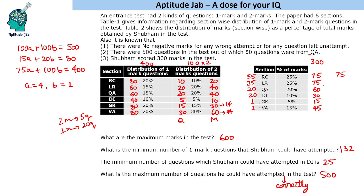If the question asks maximum questions attempted correctly: to maximize correct attempts, we try to score all marks through one-mark questions. In RC he scores 75 marks — all 75 can come from one-mark questions. For 60 marks in another section, 59 plus 8 more gives 67. In VA he can score 60 through one-mark questions. Adding all section counts: 60 + 120 + 150 + 225 = 225, plus 67 gives 292. So the minimum correct attempts would be 292 — but if the question asks maximum attempts, the answer is 500.